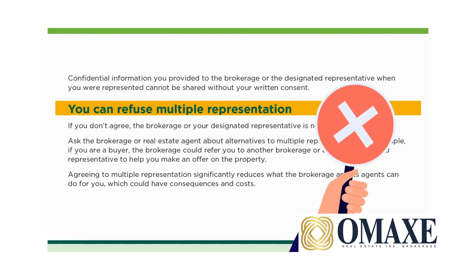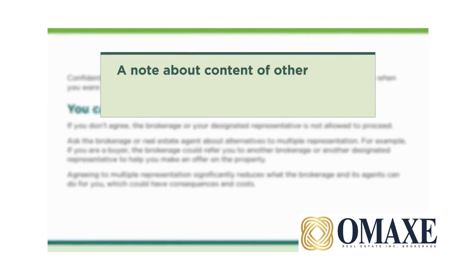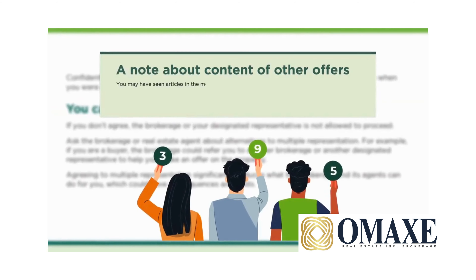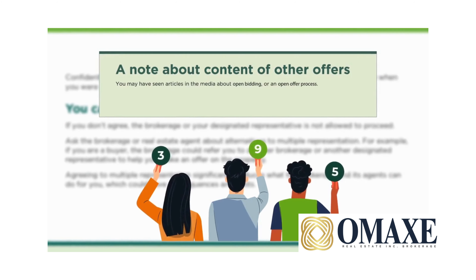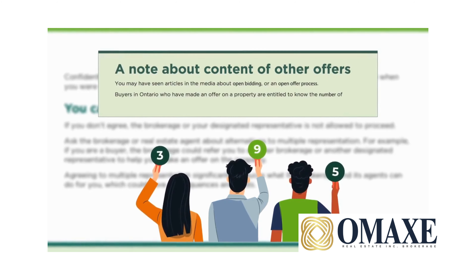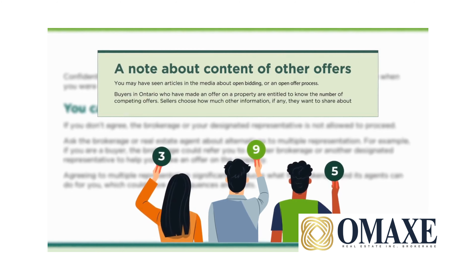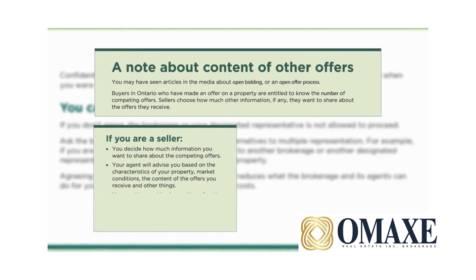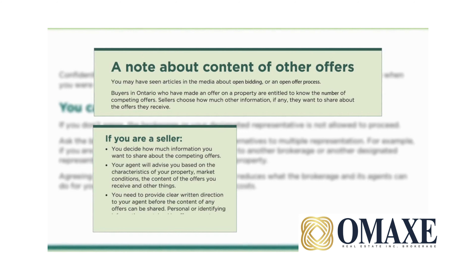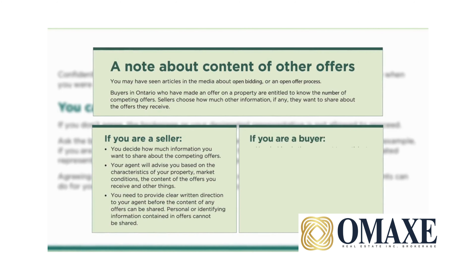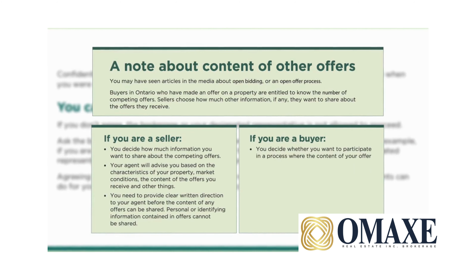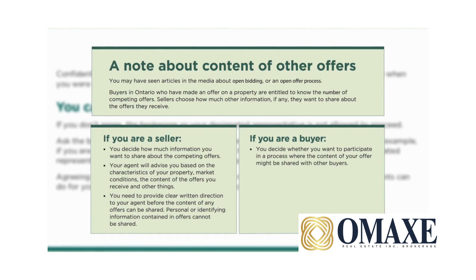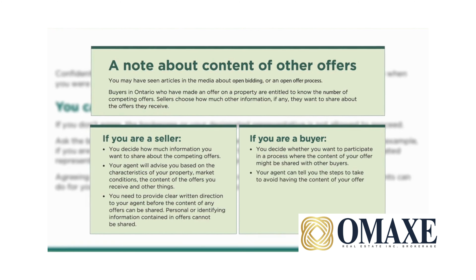Remember, you have the right to refuse multiple representation. Quick note on open offers: you may have seen articles in the media about open bidding or an open offer process. Buyers in Ontario who have made an offer on a property are entitled to know the number of competing offers. Sellers choose how much other information, if any, they want to share about the offers they receive. If you are a seller, you decide how much information you want to share about the competing offers, and you need to provide clear written direction to your agent before the content of any offers can be shared. If you are a buyer, you decide whether you want to participate in a process where the content of your offer might be shared with other buyers, and your agent can tell you the steps to take to avoid having the content of your offer shared.